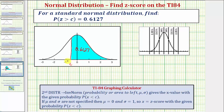However, in order to find this value of c using the TI-84, we need the area to the left of c, not to the right. Since the total area under the standard normal distribution equals one, we can find the area to the left by taking one minus 0.6127, which equals 0.3873.